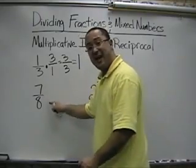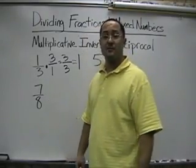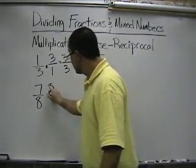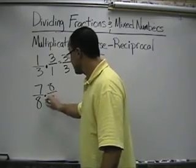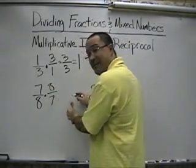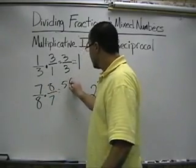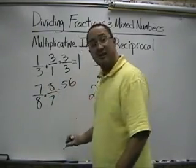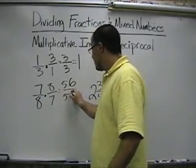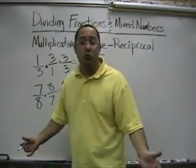Let's take a look at 7/8. What's the reciprocal of 7/8? 8 over 7. If we multiply them together, 7 times 8 equals 56, and 8 times 7 equals 56. And 56 over 56 equals 1.